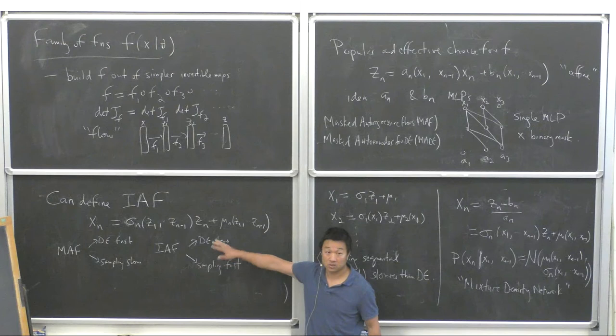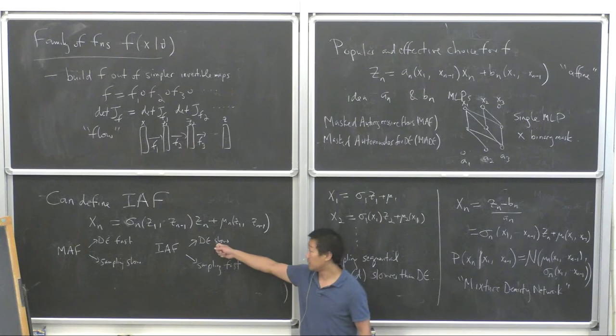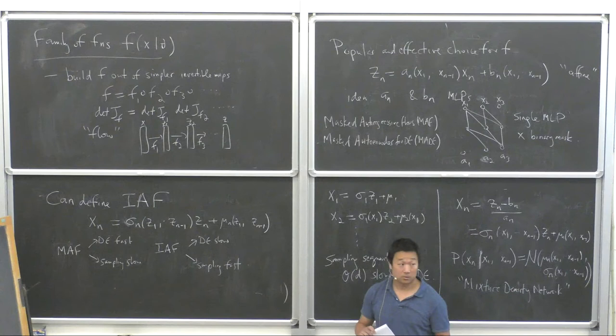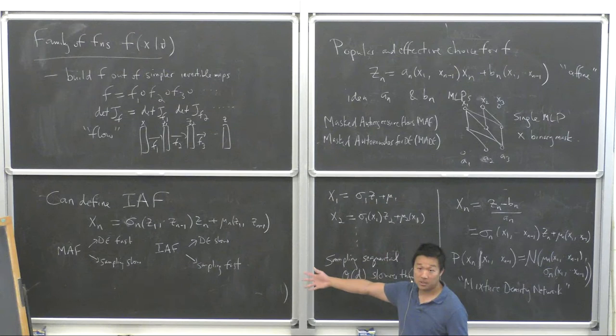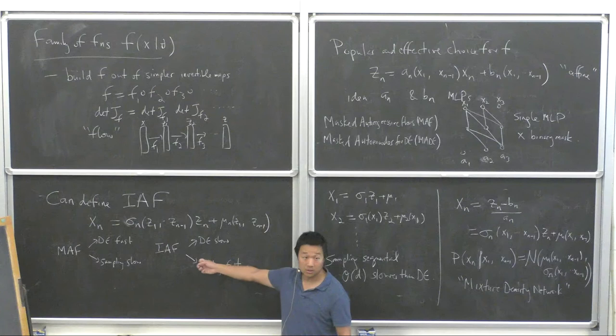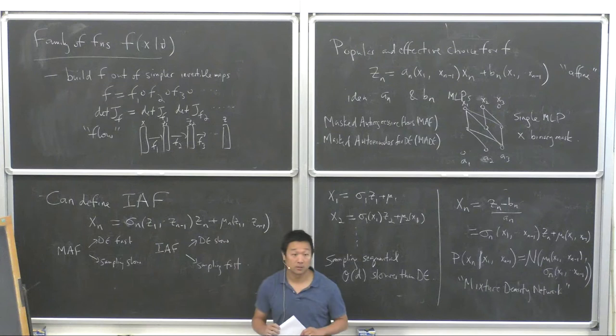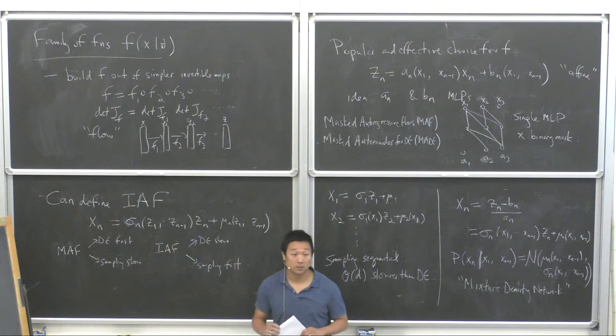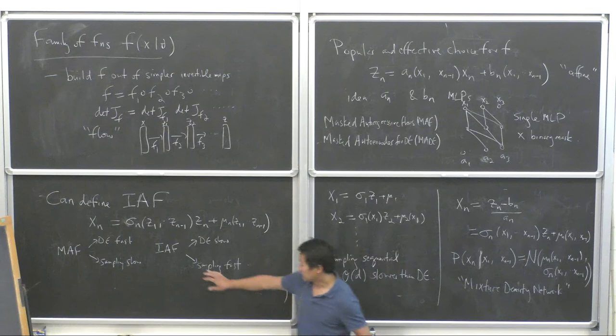This is a problem for training IAFs. If you could train them somehow, they would be fast samplers, but training with the log likelihood objective is slow. For a 500-dimensional problem, if it takes one hour to train a MAF, it would take 500 hours to train an IAF. When I talk about the first application, I'll show you one way we got around this problem to train a fast IAF.